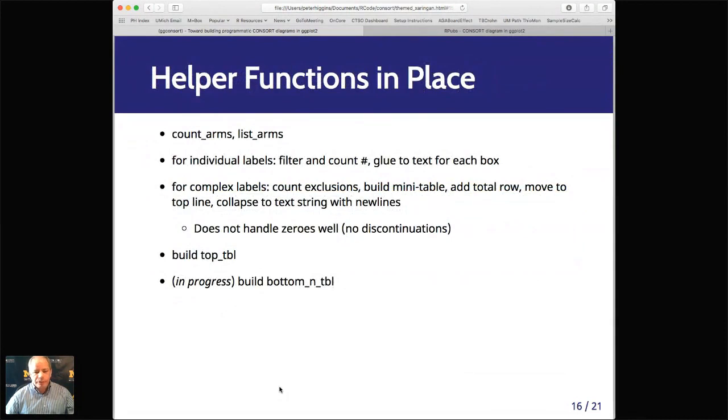I built out several of the helper functions, the count arms and list arms. For the individual labels, you filter and count and glue to the text for each box. For the more complex labels, the mini tables, essentially you're counting the exclusion reasons, building a mini table, adding a total row, moving that to the top and collapsing that to a text string with new lines. Right now, that doesn't handle zeros well if there are no discontinuations in one arm.